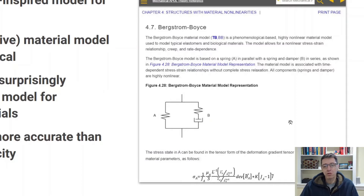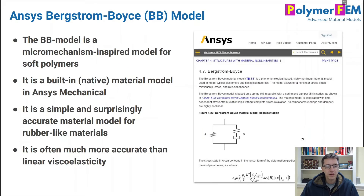In this example we're focusing on PEEK, which is a very stiff thermoplastic material, so it may not be the best choice, but we'll try and see how it works. This is a native material model for ANSYS — it's easy to use, easy to calibrate as I will demonstrate here, and it can be much more accurate than any of the linear viscoelastic models that people sometimes try for polymers.